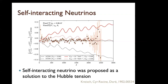In this model, massive Majorons are added so that neutrinos interact by exchanging these Majorons. Because the Majorons are massive, they are not produced — they only give self-interaction to neutrinos. The parameter G_eff characterizes the neutrino self-interaction strength, similar to the Fermi constant but for neutrino self-interaction, at the scale of 10⁻² MeV. I'll discuss this in more detail later.